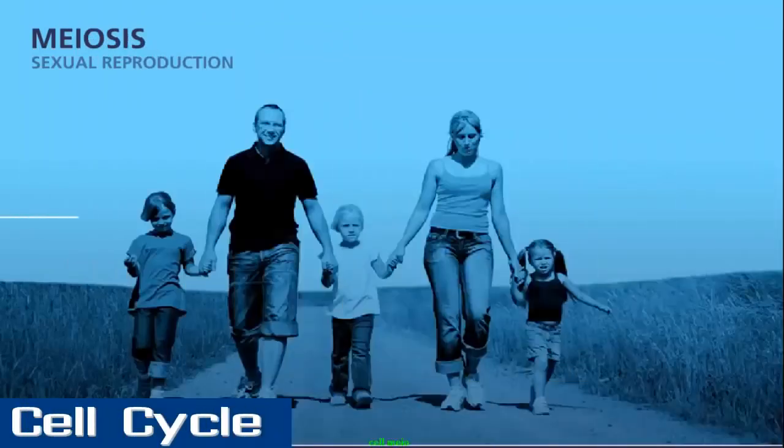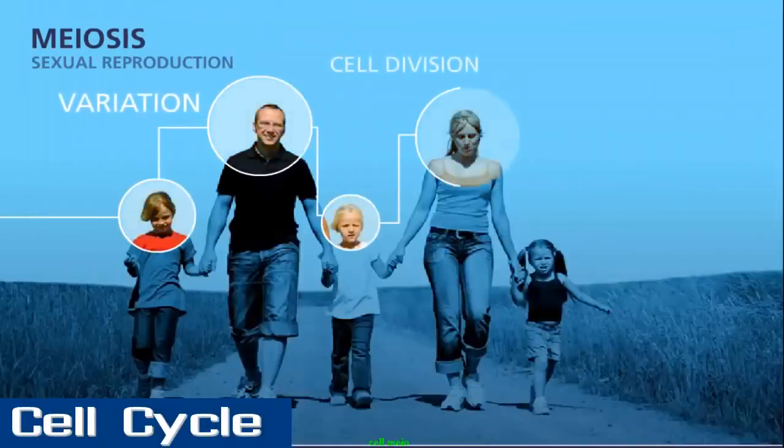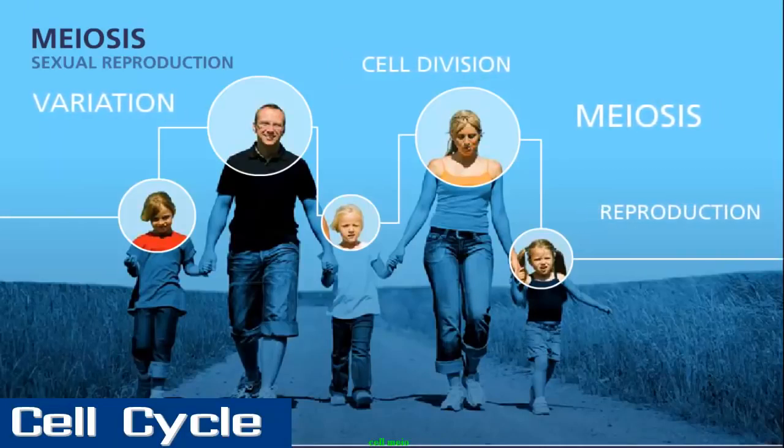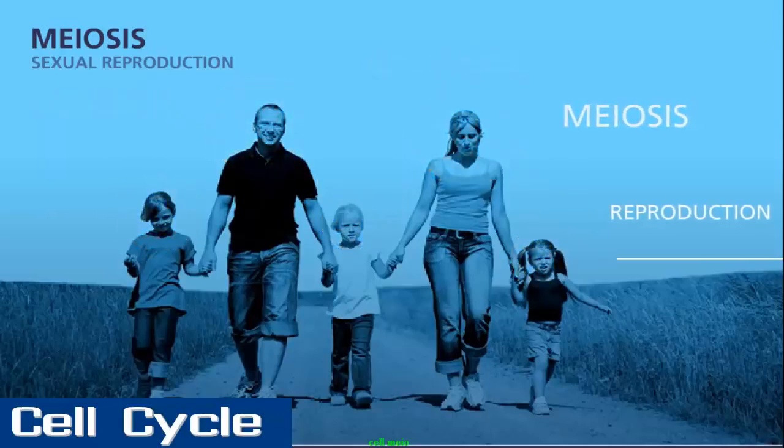Have you ever wondered why children do not look exactly like their parents, or why some siblings look so different from each other? The answer lies in the process of meiosis, which generates the gametes for reproduction.